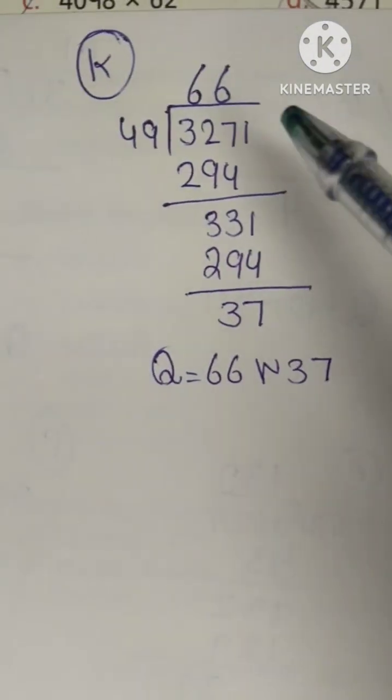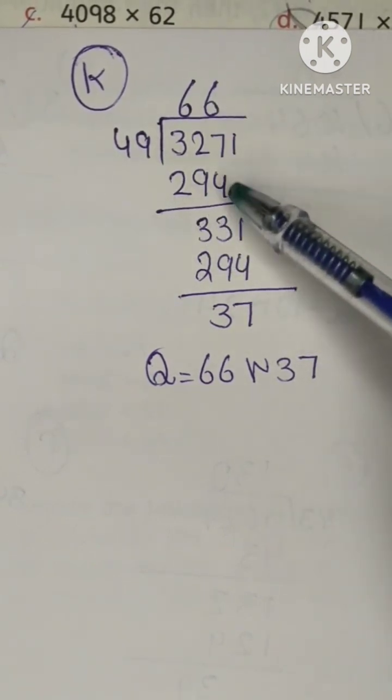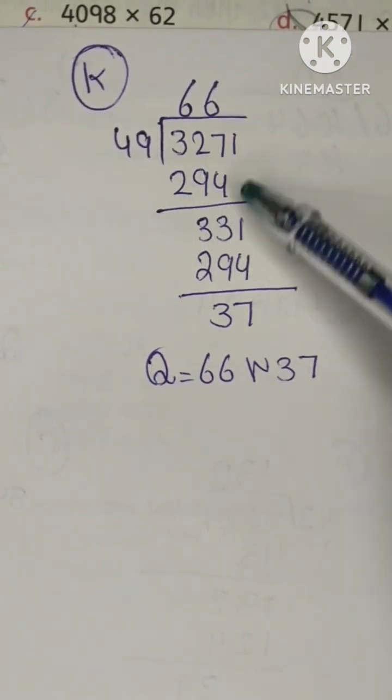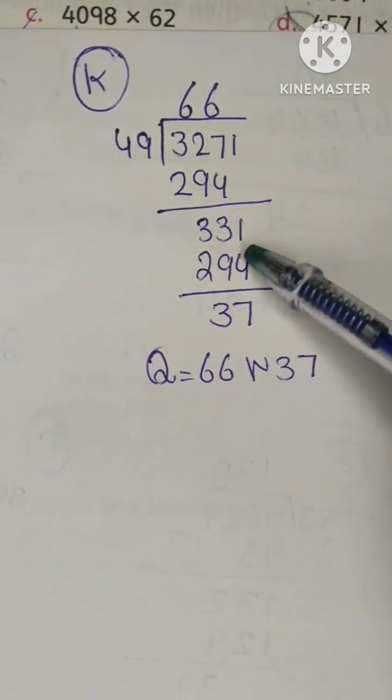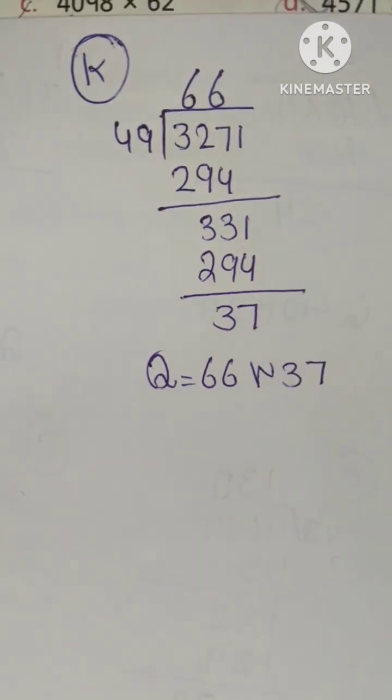Next question is question number K, 49 into 327. 49 into 6 is 294 minus, 33 answer 1 drop. 49 into 6 is 294, 37 last.